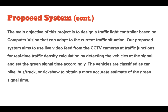To summarize, the objective of this project is to design a traffic light controller based on computer vision that can adapt to the current traffic situation. Our proposed system aims to use live video feed from CCTV cameras at traffic junctions for real-time traffic density calculation by detecting the vehicles at the signal and setting the green signal time accordingly. Moreover, the vehicles are classified as car, bike, bus, truck, or rickshaw to obtain a more accurate estimate of the green signal time.